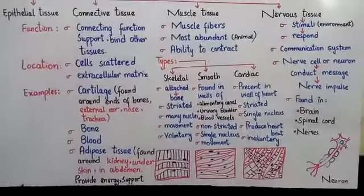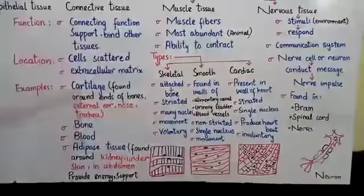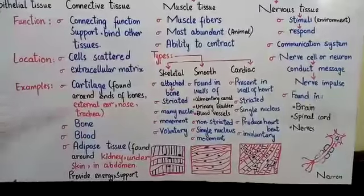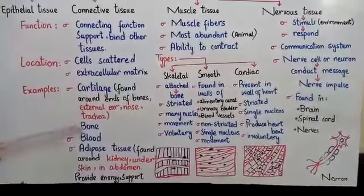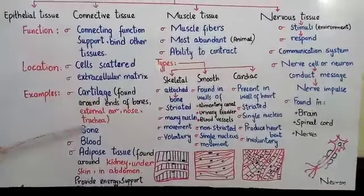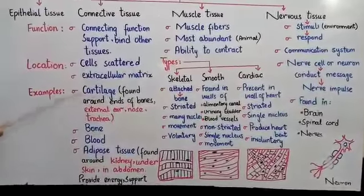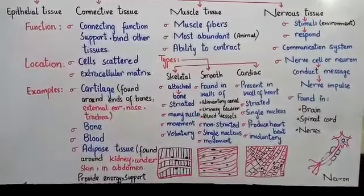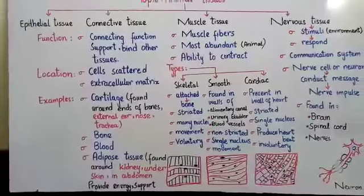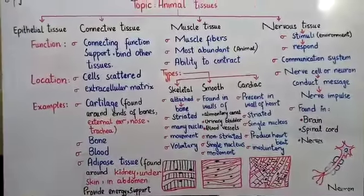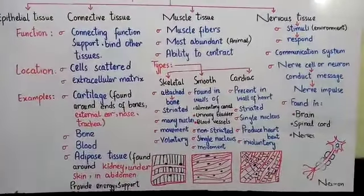Next, let's see the difference between cartilage and bone — they are both types of connective tissue. Cartilage is flexible; we can say it is an elastic structure. But bone is a harder structure. Both are connective tissue.